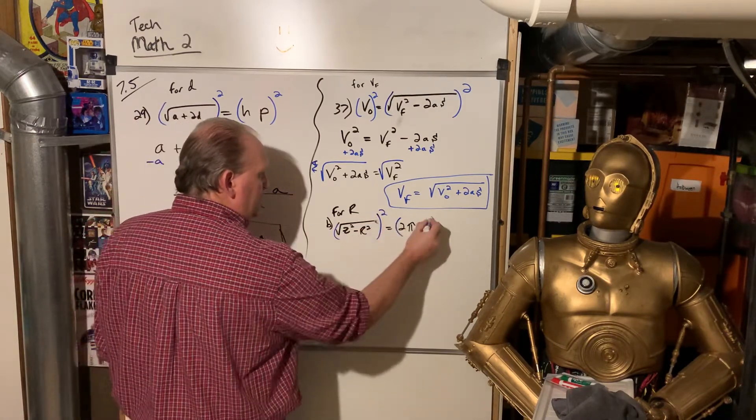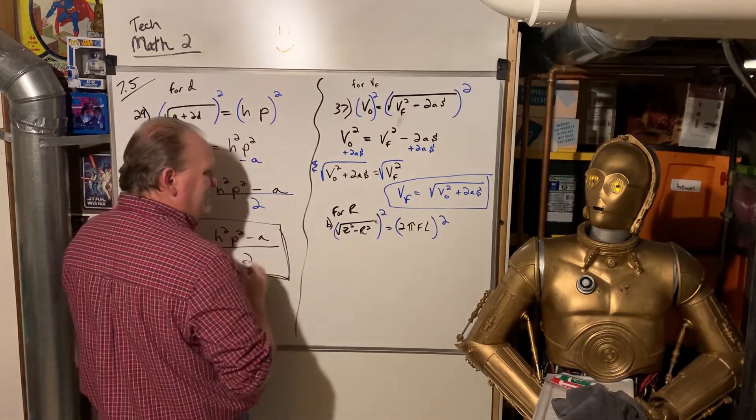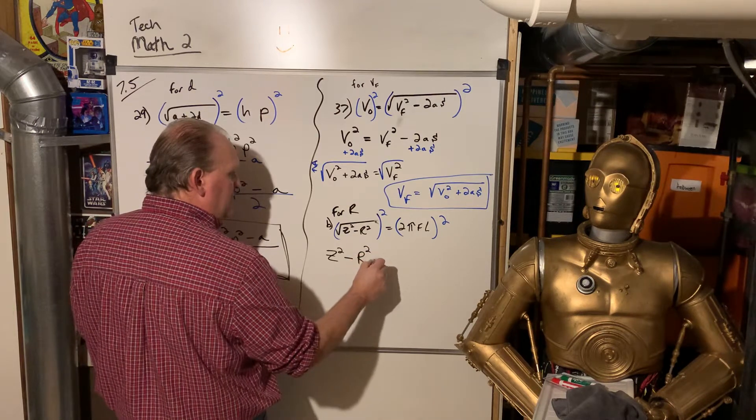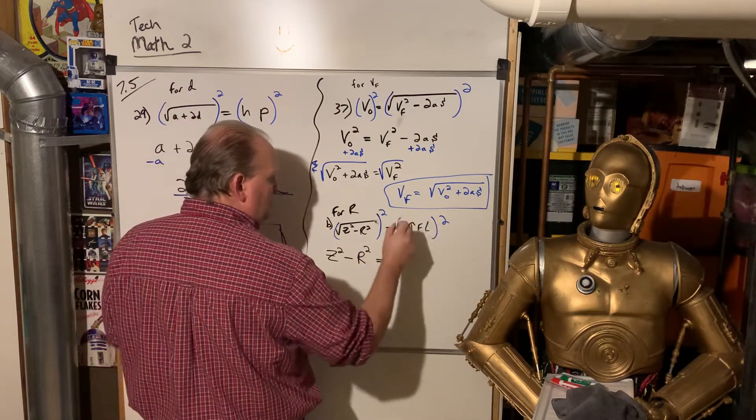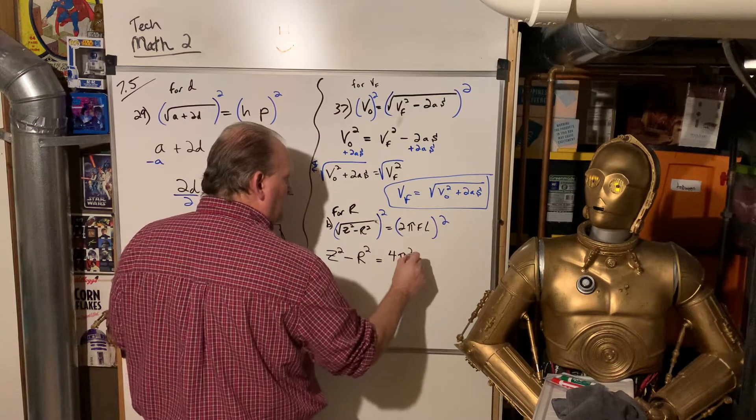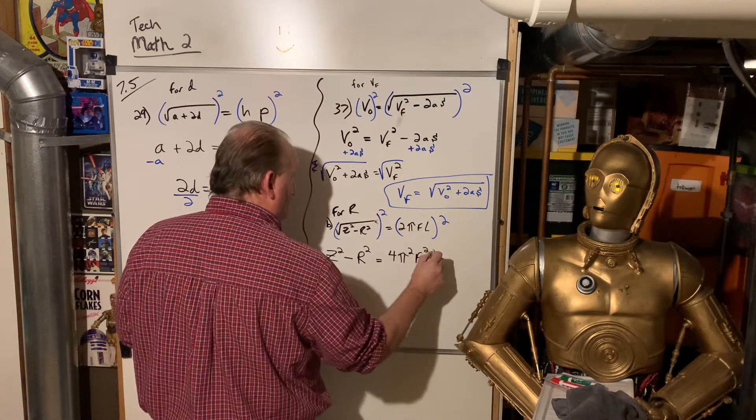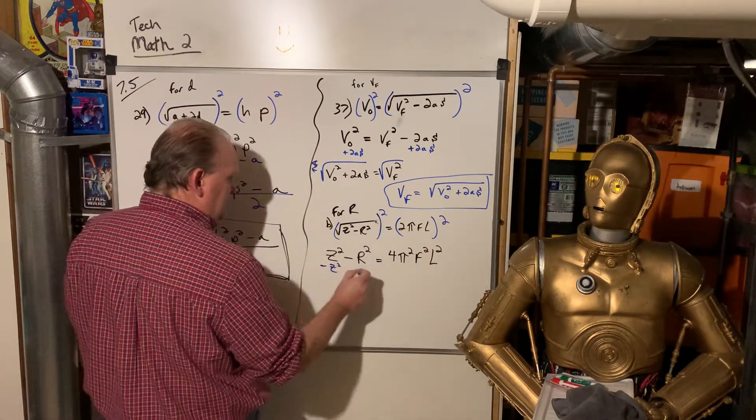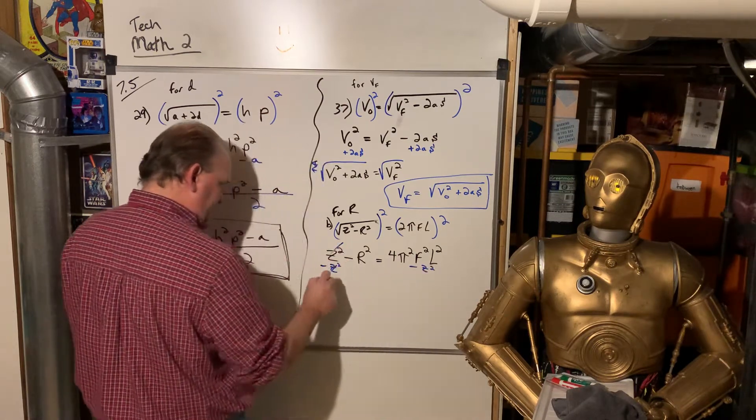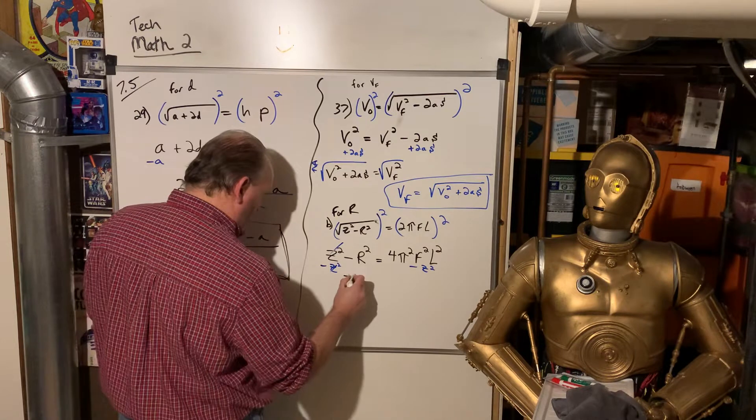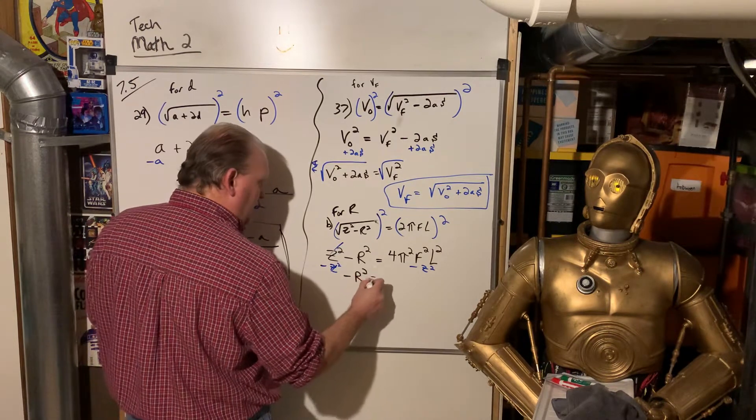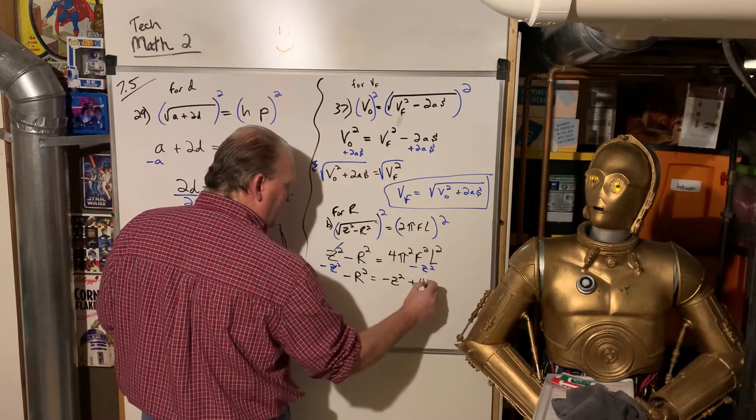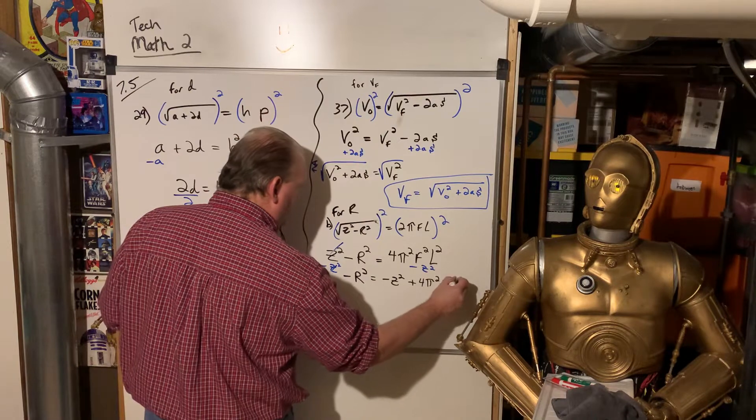Here we are again, square both sides. So we end up with Z squared minus R squared equals 2 pi FL times 2 pi FL is 4 pi squared F squared L squared.